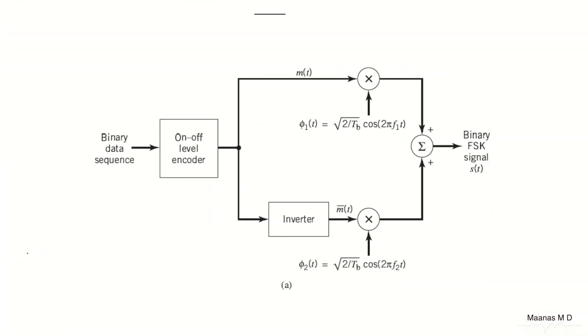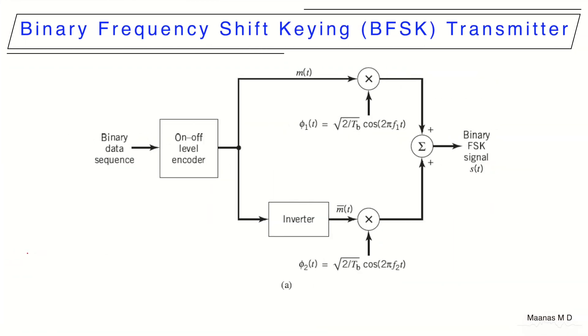Now let's look at the BFSK transmitter architecture. The binary data sequence is passed to a unipolar NRZ on-off level encoder. As you know, unipolar encoder has two levels, 1 and 0. When the symbol 1 transmits through this, it is modulated at a frequency f1, that is the basis function.